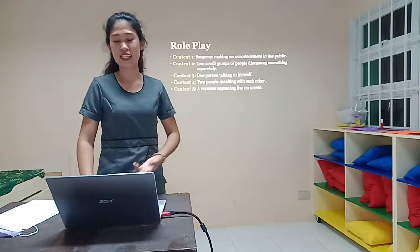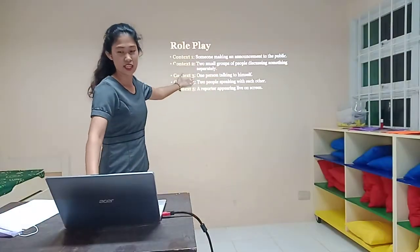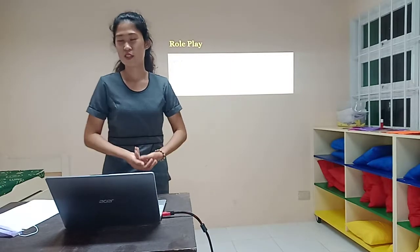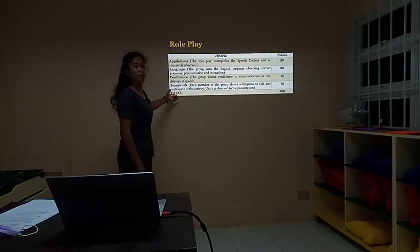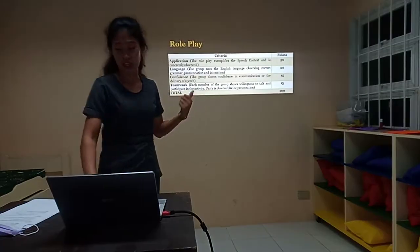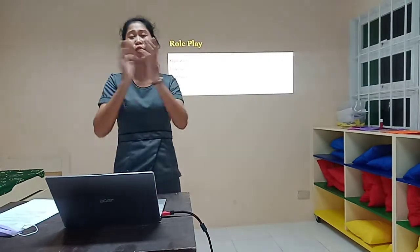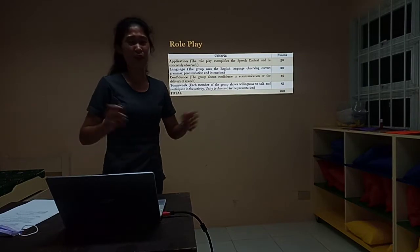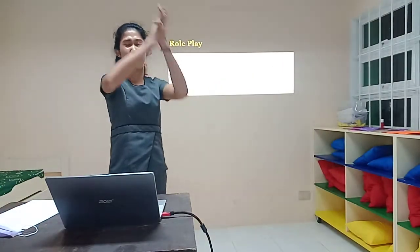I will give you the context for each group — group one through five. Just read the context and then role play. Here is the rubric — this will be your guide so you are aware of how you will be graded in this activity. Let's give a hand to everyone, since you were able to perform the task very well. Very amazing! Let's give a round of applause to everyone.